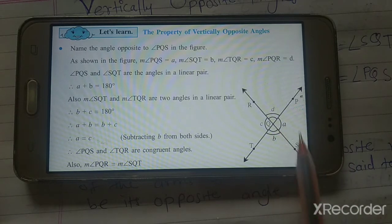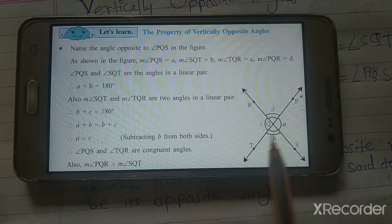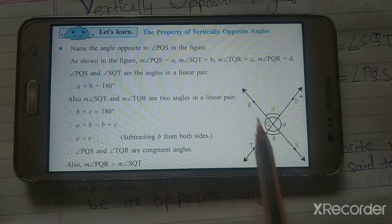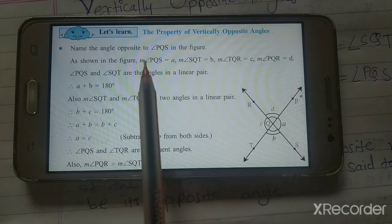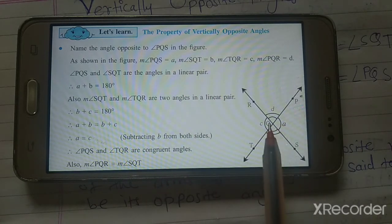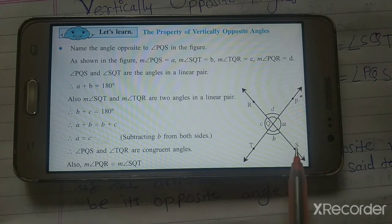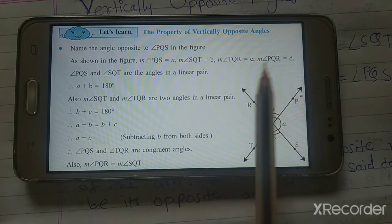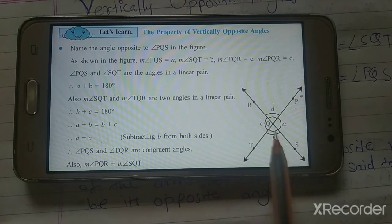Now, angle PQS is named A, angle SQT is named B, angle TQR is named C, and angle RQP is named D. So the measurement of PQS is A, measurement of SQT is B, measurement of TQR is C, and measurement of PQR is D.